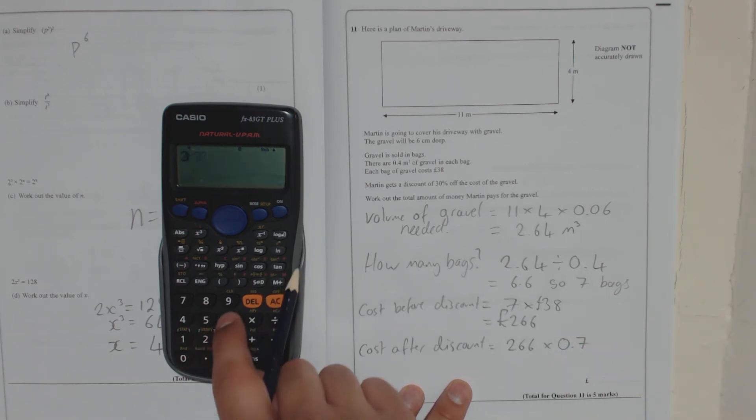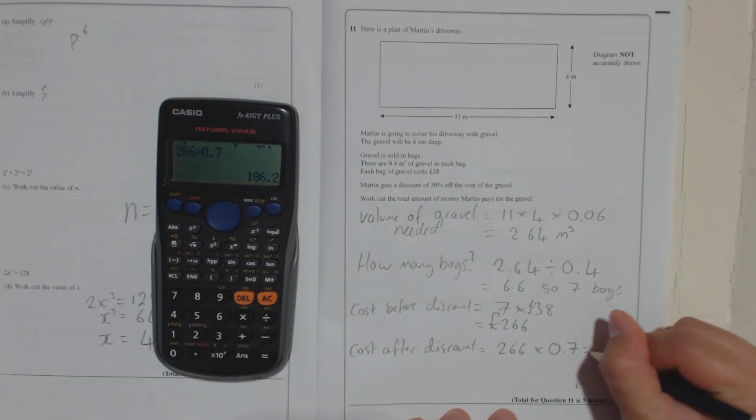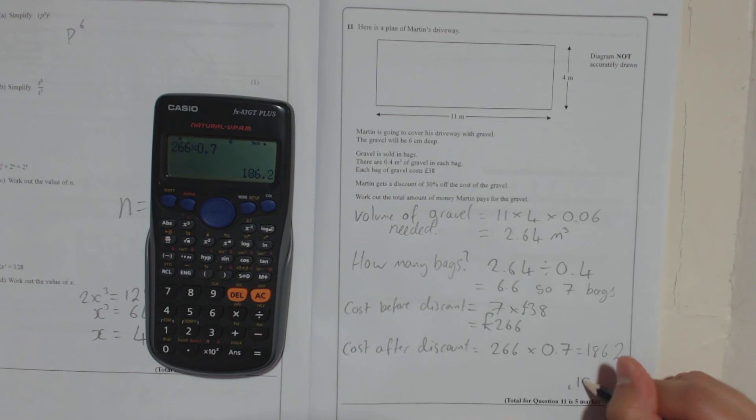So 266 times 0.7 is 931 over 5. So it's 186.2. So in pounds that is £186.20 because it'd be 20p.